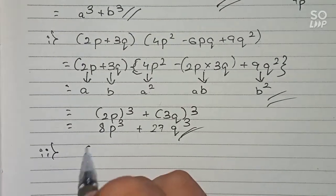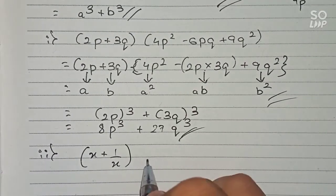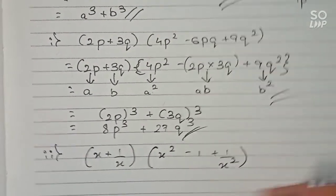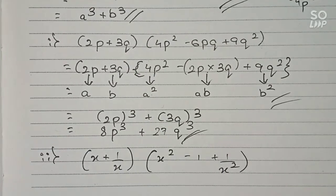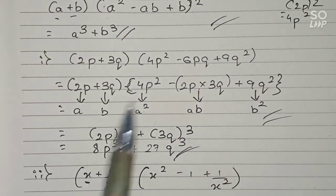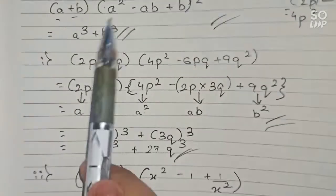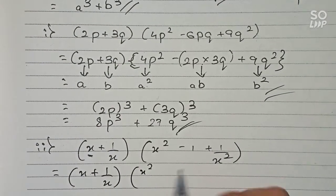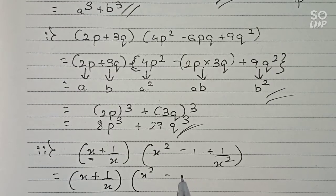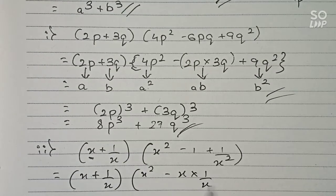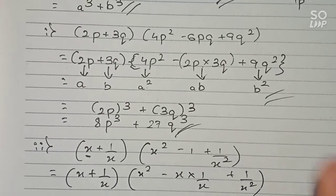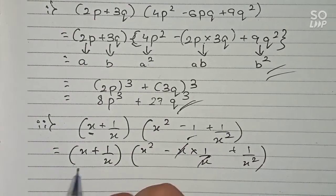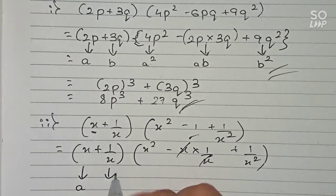The next question says: (x + 1/x) multiplied by (x² - 1 + 1/x²). We can also see that this is in the same formula, where x equals 'a' and 1/x equals 'b'. In the middle term, x multiplied by 1/x gives 1, and the 'x' values cancel, leaving minus 1 — confirming the ab term.